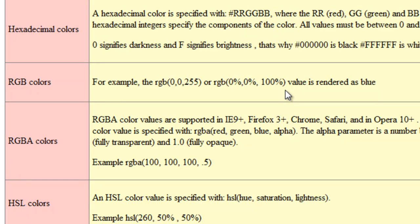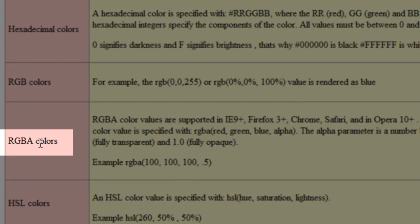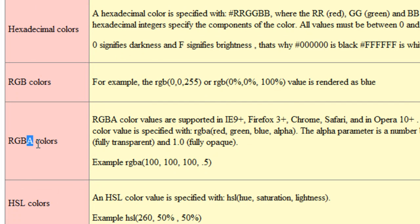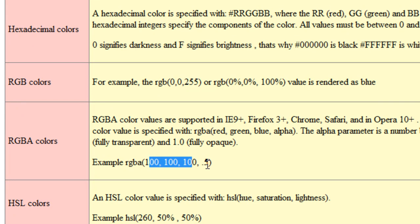Colors can now be rendered semi-transparent, or translucent, using the RGBA color model. The extra 'A' stands for alpha, which is the parameter that makes a color fully transparent, fully opaque, or semi-transparent. For example, RGBA(100, 100, 100, 0.5) — alpha is a value between 0 and 1 — renders the color at 50% transparency.